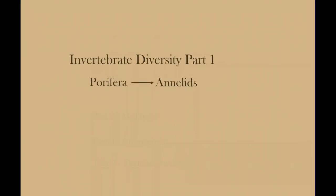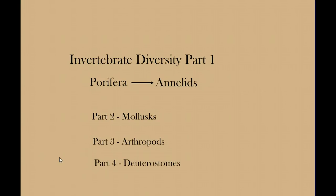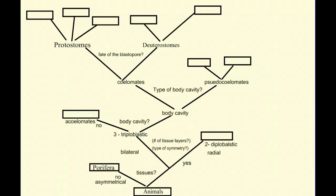This is the first video in our series on invertebrate diversity. In this video, we'll move from the phylum Porifera to the phylum Cnidaria. In part two, we'll investigate the mollusks. In part three, we'll take a closer look at the arthropods. And in part four, we'll have a quick overview of deuterostomes before beginning our series on chordates. In our introductory video, we built this classification tree to look at the diversity of animals. This series of videos will move us through the tree as we investigate each branch.